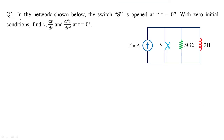In the first problem, in the network shown below, the switch S is open at t equal to 0. With zero initial conditions we need to find v, dv/dt, and d²v/dt² at t equal to 0 plus. We need to find the conditions when the switch is closed as well as open, and find out the values of voltage, the velocity of voltage, and the acceleration of voltage. We need to find the value of v across the 2 Henry inductor, or across the 15 ohm resistor, or across the switch, since the voltage in a parallel circuit remains the same.